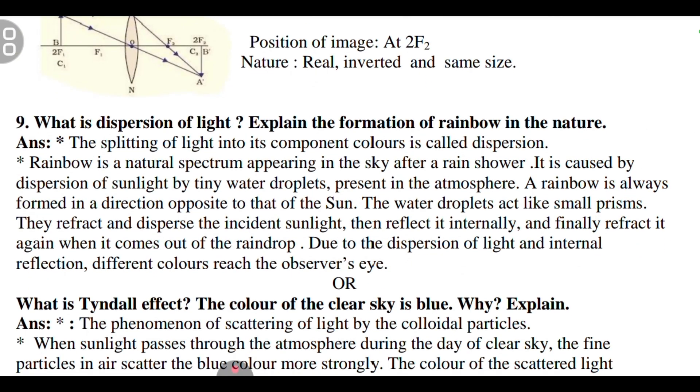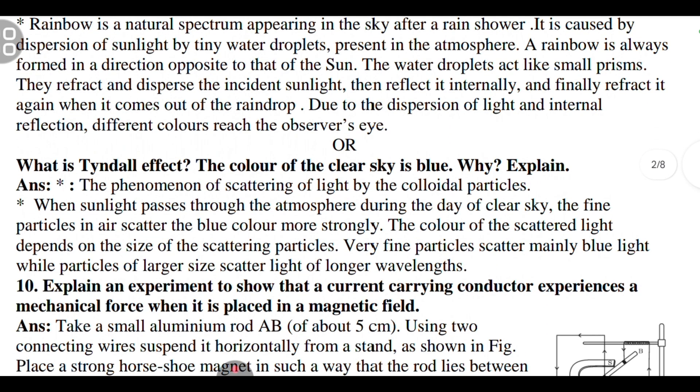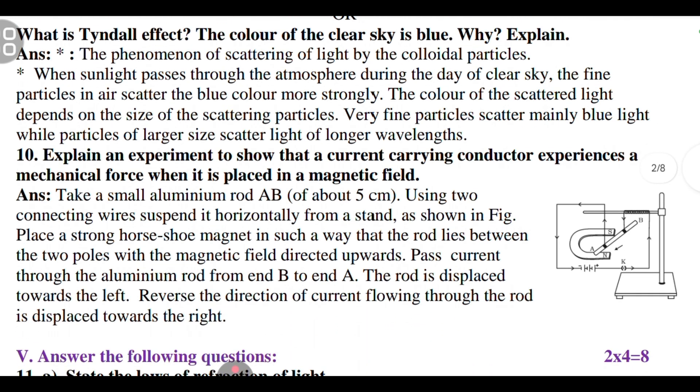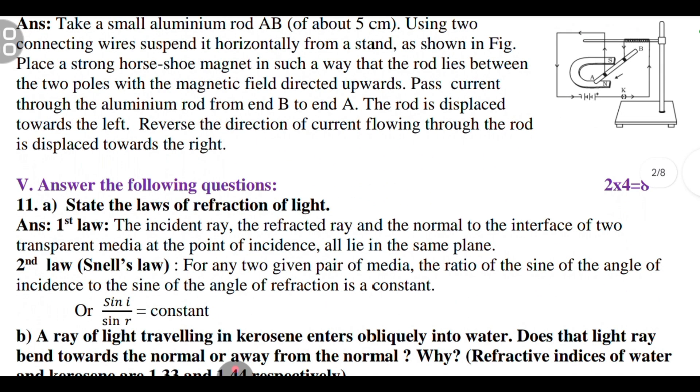The eighth question is from the refraction and reflection of light chapter. Draw the ray diagram for the image formation in a convex lens when the object is placed at 2F1. Mention the position and the nature of the image formed. F1 is the principal focus of the lens. Sometimes they will not give F1, it means it is principal focus of the lens.